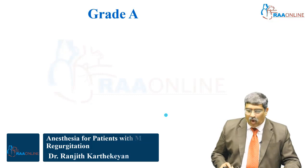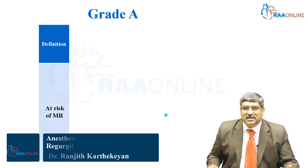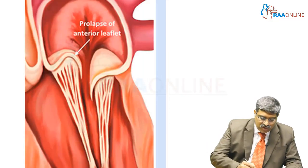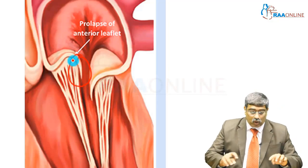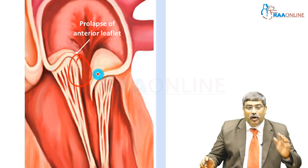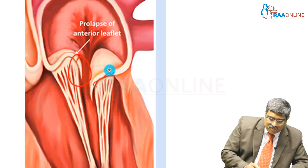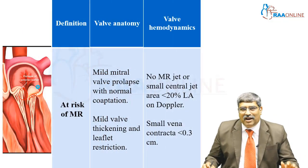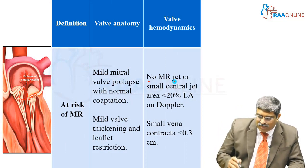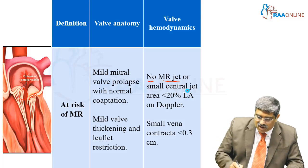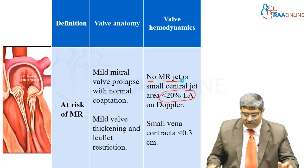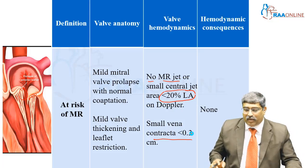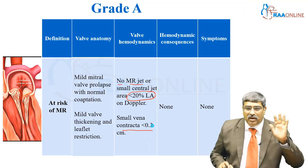Grading of mitral regurgitation. Grade A is the 'at risk' stage. There may be slight mitral valve prolapse but coaptation of both leaflets will be normal, with mild valve thickening and possibly restricted leaflet motion. Valve hemodynamics show no MR jet or a small jet occupying less than 20% of the left atrium, vena contracta less than 0.3 cm, no hemodynamic consequences, and no symptoms.